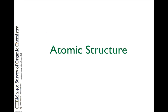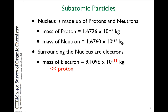Let's talk about atomic structure. This is the basic lowest level structure we're going to talk about in this class. When we talk about the structure of atoms and the makeup of atoms, we are thinking about the three components that make up atoms. Those are protons, neutrons, and electrons.